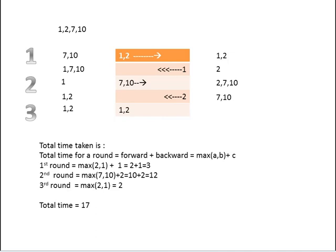So now if we consider the total time taken, the time for a round is equal to forward plus backward. For forward it is the maximum of 2 persons. In this case for the first round it is max of 2,1, that is 2 minutes plus 1, 3 minutes totally.